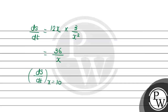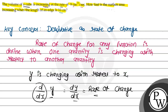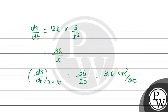Substituting x equals 10 into the expression, that gives us dS/dt equals 3.6 cm squared per second. So dS/dt when x equals 10 centimeters equals 3.6 cm squared per second. This is the solution of the question. I hope the solution was helpful. Thank you.